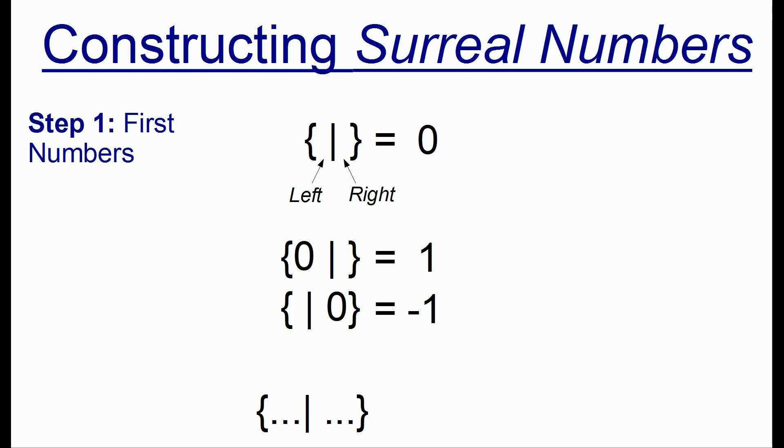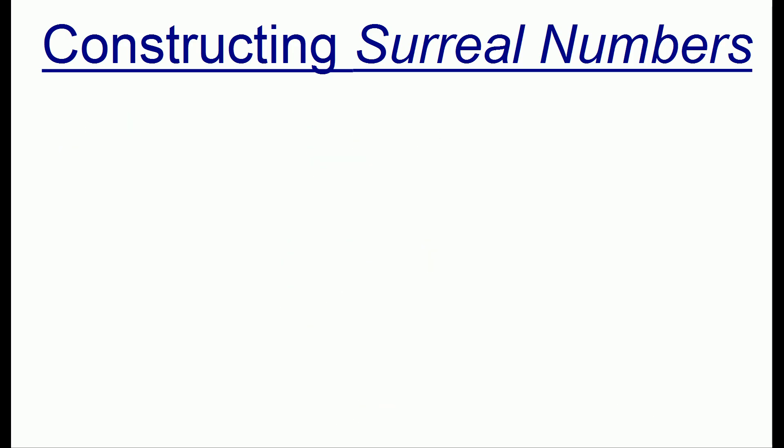And the surreal numbers are built up in this manner where each time we're going to take one of the numbers we built up and we're going to see what happens when we put that number on the left side or the right side or some combination of numbers we've already built up. So the surreal numbers are actually built up by a branching process.